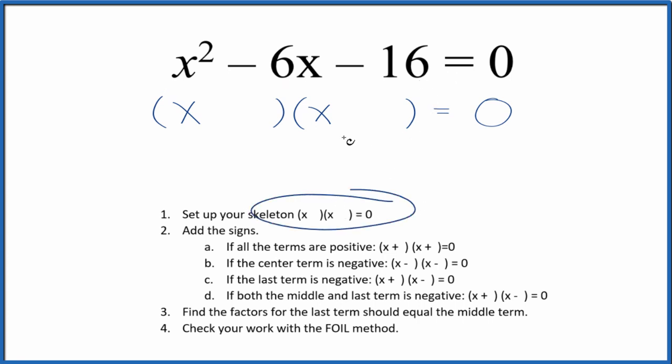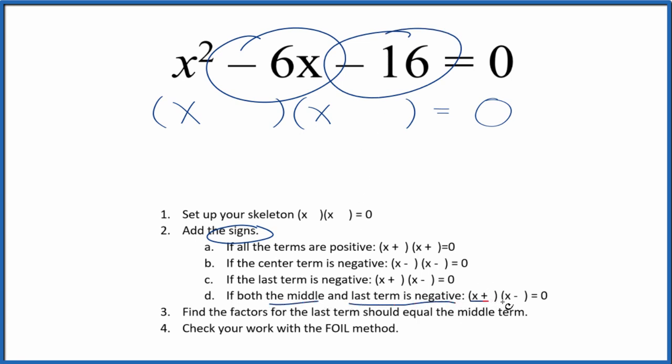Let's start with the skeleton equation. This is our skeleton equation, and then we can add signs to the skeleton here. So I have a negative and a negative here. If the middle and the last term, they're both negative, I'm going to put a positive and negative in the skeleton, like this.